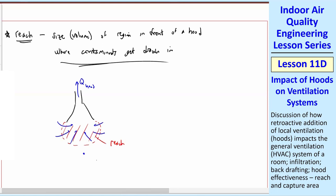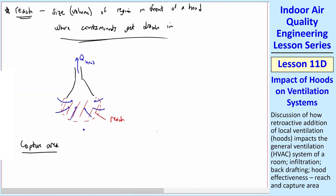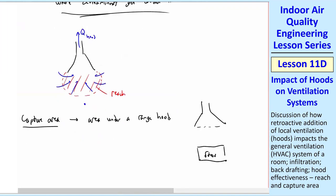There's something similar called capture area, and that's a little bit different. It's defined as the area under a range hood above your stove. For household purposes, they will draw a line from the corner of the hood down and call this area the capture area, implying that if you have something on the stove like this, it'll be captured.